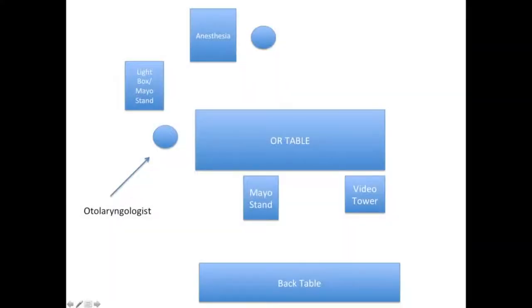The following diagram explains the room layout for the procedure. It is important to note that the operating room table begins with the head towards anesthesia, but then rotates 90 degrees counterclockwise so that the head is with the otolaryngologist.